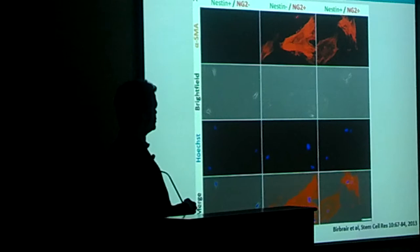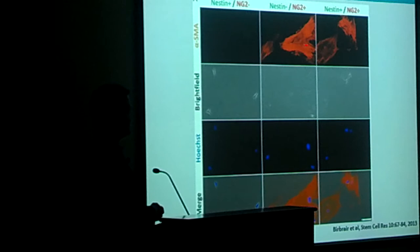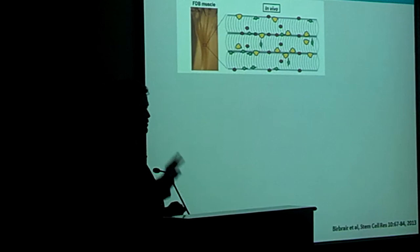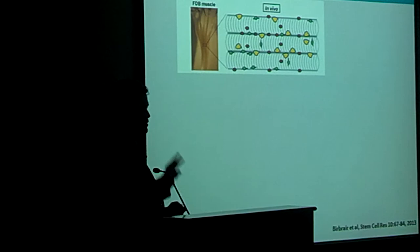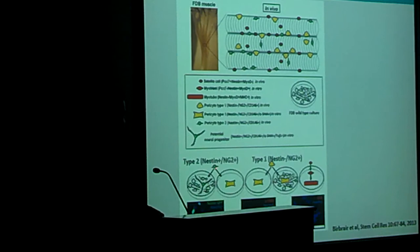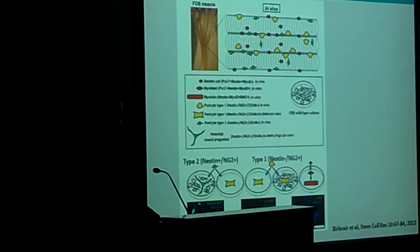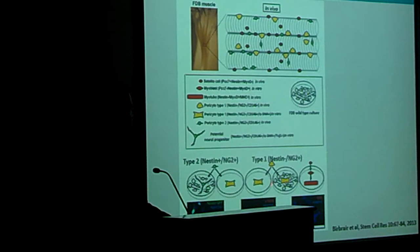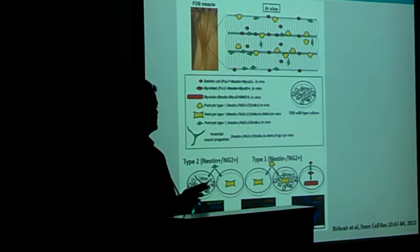We hypothesized that probably the cell population that may originate neural progenitors needs secreted factors or contacts from other cells present in those skeletal muscle cultures. To address this, we co-cultured each of these cell populations from the transgenic mice together with whole skeletal muscle cultures from wild-type animals. We found that only one cell population — the one expressing both nestin and NG2, corresponding to type 2 pericytes — can form nestin-GFP-positive neural progenitors after 10 days, indicating that in skeletal muscle only type 2 pericytes have the potential to form neural progenitors. When cultured in medium without special supplements, both pericyte subtypes become smooth muscle cells.